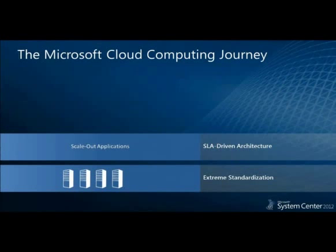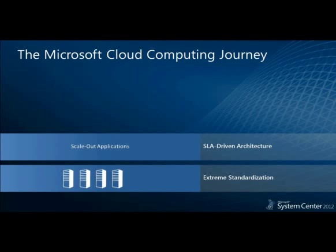The second point is that application services running in our global data centers are inherently resilient. We assume that failures are going to happen, and some of that is actually built into the application. So if a piece of infrastructure that an application is hosted on goes down, we just move the application over to another piece of infrastructure versus taking the application down. That's the point around SLA-driven architectures.